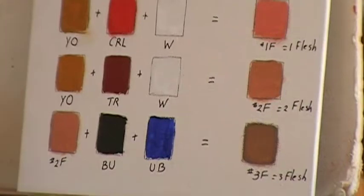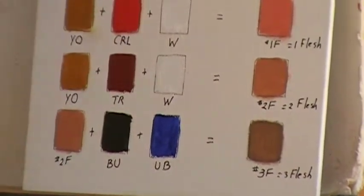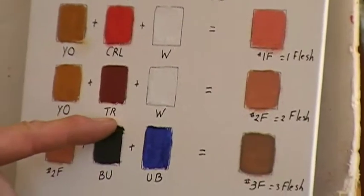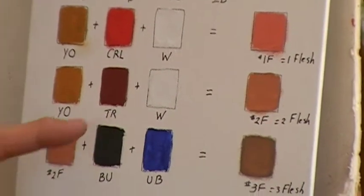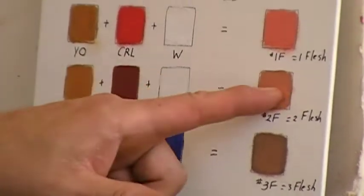I could have mixed, if I took a little cadmium red light and put in some burnt sienna I'd get something that's called Tierra Rose or you could buy a tube of it. And if I mix that with yellow ochre and white I get a duller flesh tone.